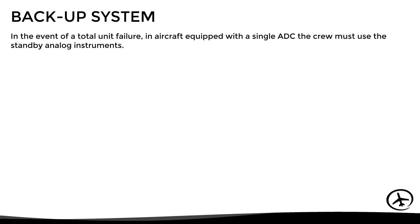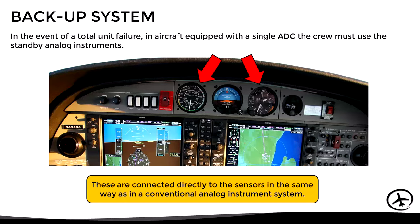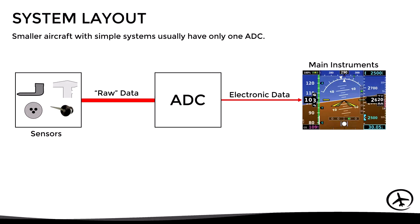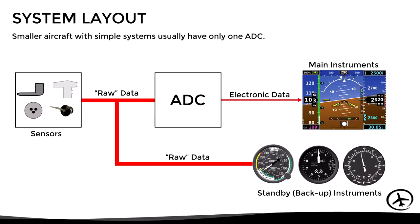If the ADC suffers a total failure and the aircraft is equipped with a single ADC, the crew must use the standby analog instruments, which are connected directly to the sensors in the same way as a conventional analog instrument system. In smaller aircraft with simple systems that have only one ADC, the sensors send raw data to the computer, but also send raw data to the standby analog instruments, so that if there is a failure in the ADC, the standby instruments are not affected.